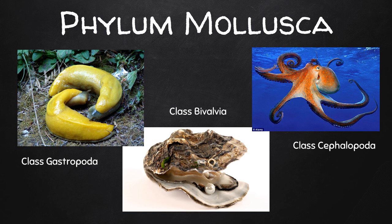Animals in phylum Mollusca have soft bodies and hard shells on the inside or outside of their bodies. The phylum is divided into three main classes: class Gastropoda, including snails and slugs; class Bivalvea, which are animals with two shells like clams and oysters; and class Cephalopoda, which includes octopi and squid.